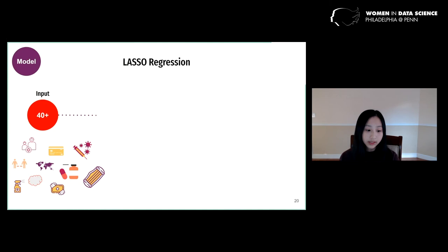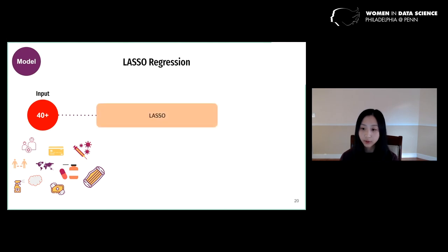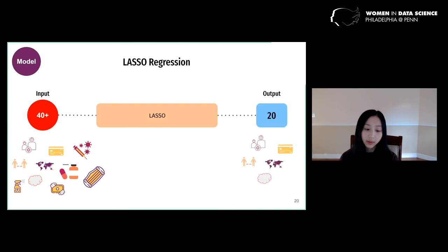To gain some insight on the importance of certain variables, we did LASSO regression to pick out a subset of important variables for linear regression. And we used machine learning methods to predict COVID-19 county death rate.